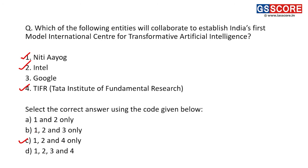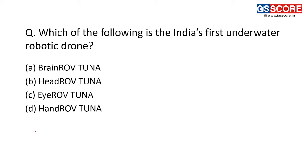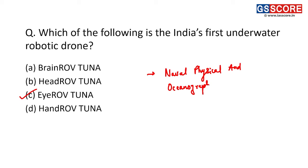Fifth question: which of the following is India's first underwater robotic drone? India's first underwater robotic drone is I-Rov Tuna. It was handed over to NPOL — the Naval Physical and Oceanographic Laboratory of DRDO. The answer is I-Rov Tuna.